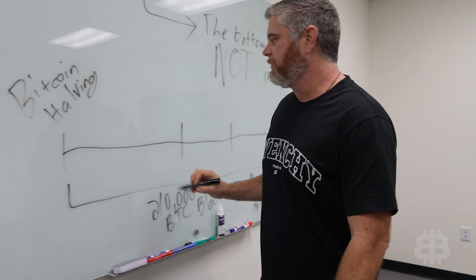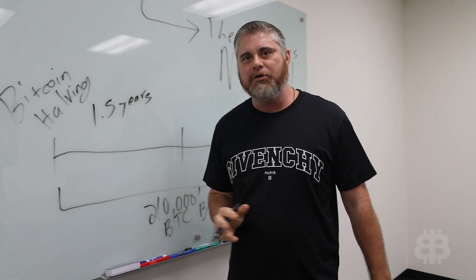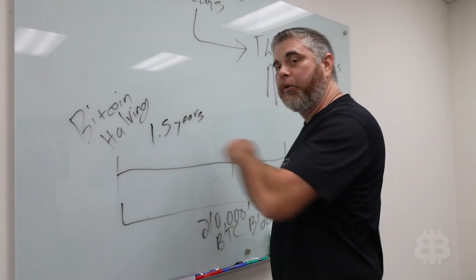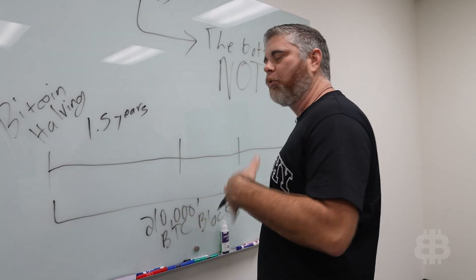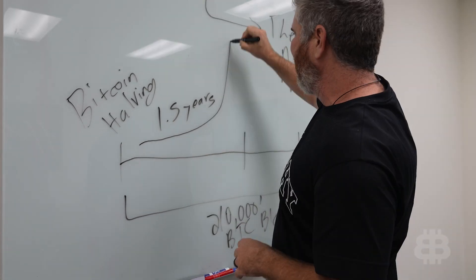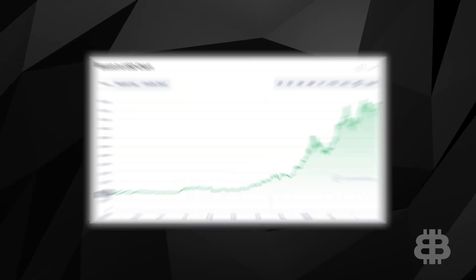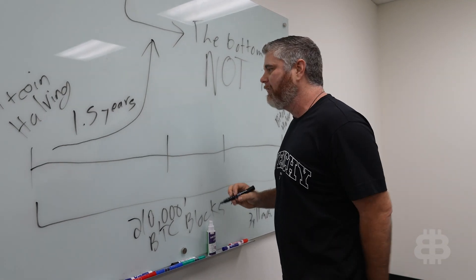So your first one here, this is 1.5 years. What happens in the 1.5 years following a Bitcoin halving? Last one was in May of 2020. Next one is probably March to April of 2024. What happened? Well, generally, we see it go like that. That's what we see. We see parabolic action for a year and a half for Bitcoin.